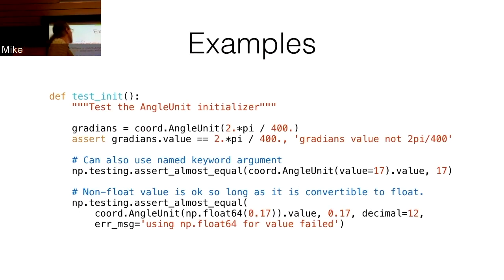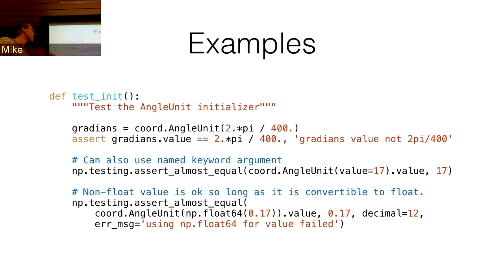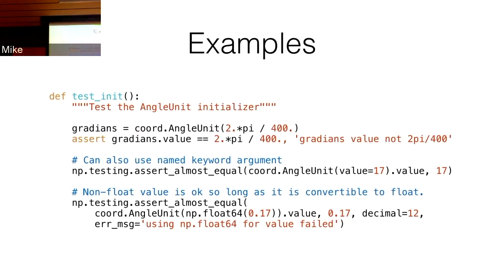I always like to document with a comment what I'm actually trying to test. A lot of times English is easier to read than code — so just note what you're doing: 'non-float value is okay, so it's just convertible.' Those comments help organize your thoughts and if something fails you can come back and see what were we trying to do there. For small things I often combine the do-the-statement and assert-the-result in one line — it's fine as long as it's readable.